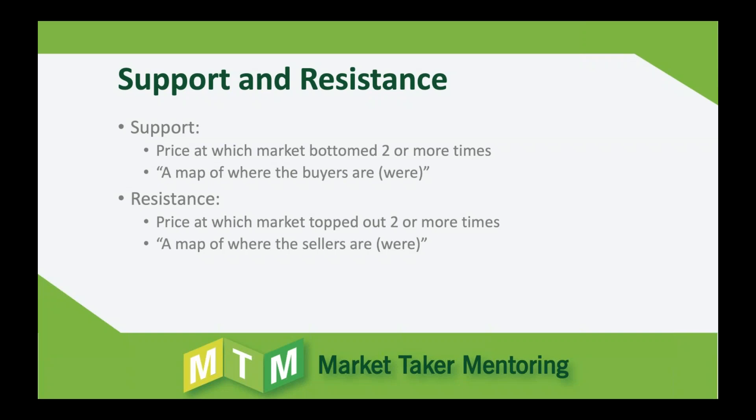Support is when looking at a chart - it's a price at which the market hit a bottom price two or more times and then bounced higher. It's basically drawing a line between two low points. If an asset falls to a certain price and bounces higher, then falls to that price again and bounces higher, we have to ask why. Support is simply a map of where the buyers were in the past.